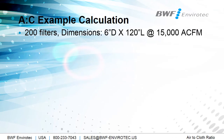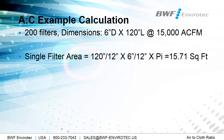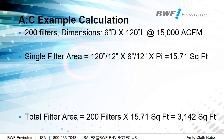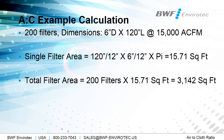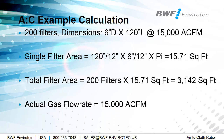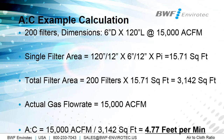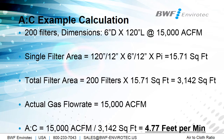To take it through an actual example calculation: if you have 200 filters with a dimension of 6-inch diameter and 120 inches long, and 15,000 ACFM going through the baghouse, you first determine the single filter cloth area. That's the length divided by 12 to convert to feet, times 6 inches divided by 12 to convert to feet, times pi — giving 15.71 square feet for a single filter. Then 200 filters times 15.71 square feet equals 3,142 square feet total. Taking 15,000 ACFM divided by 3,142 square feet gives an air-to-cloth ratio of 4.77 feet per minute.